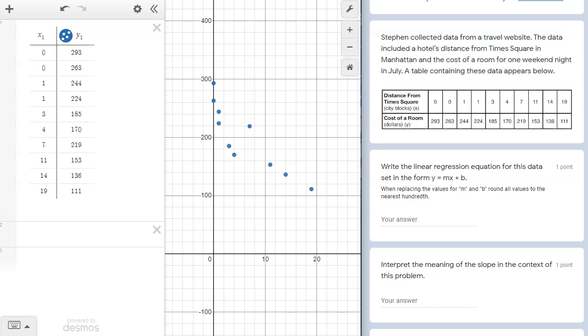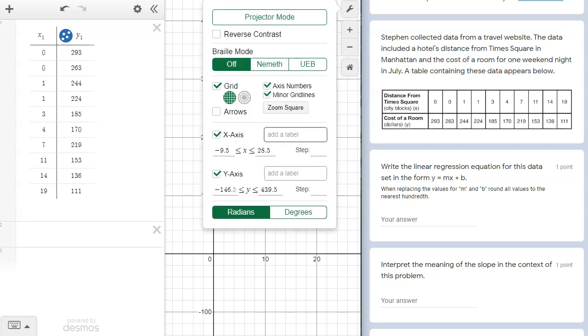This next step you could skip, but I think you may find it useful. I'm going to tap the wrench in the upper right-hand corner and click add a label for the x and y axes. Based on the performance task, we know that the x-axis should be labeled distance from Times Square, city blocks. We can also see that the y-axis should be labeled cost of room dollars.